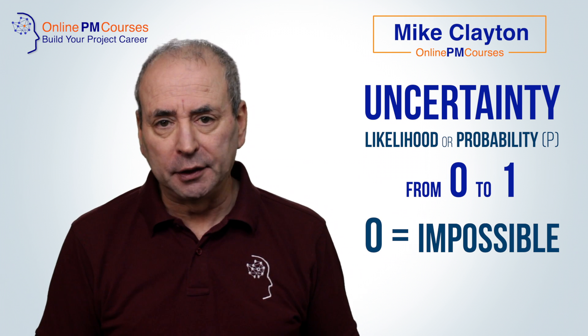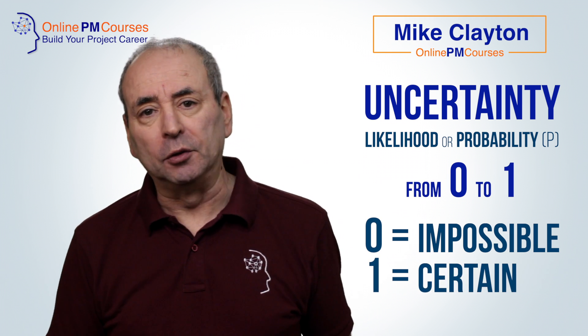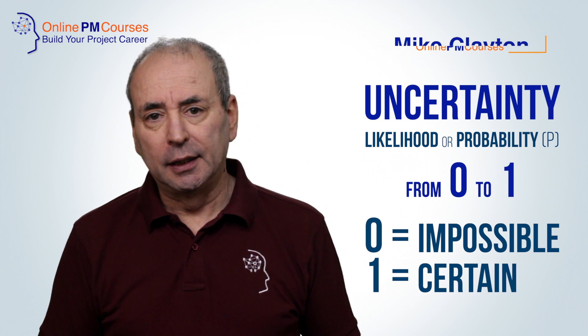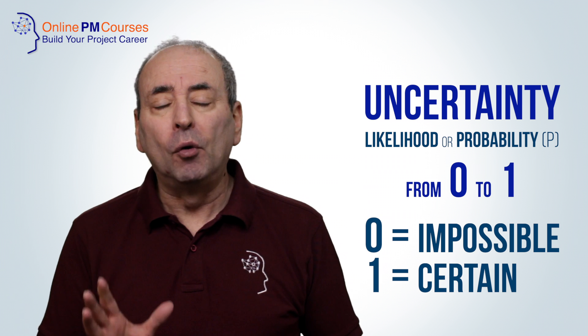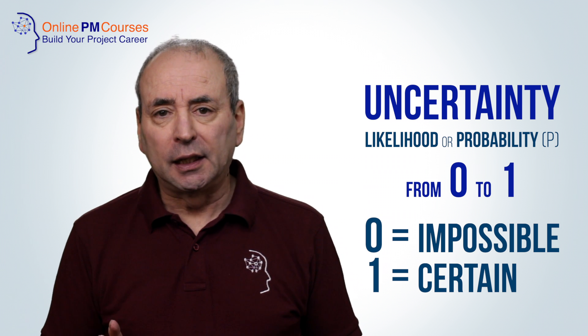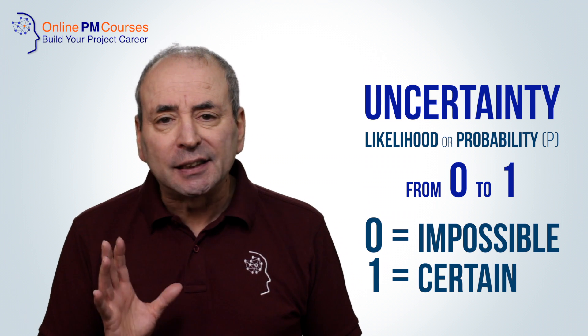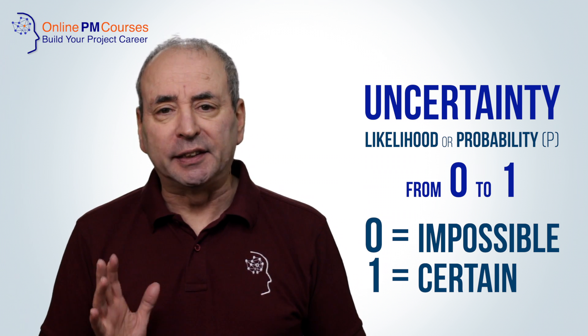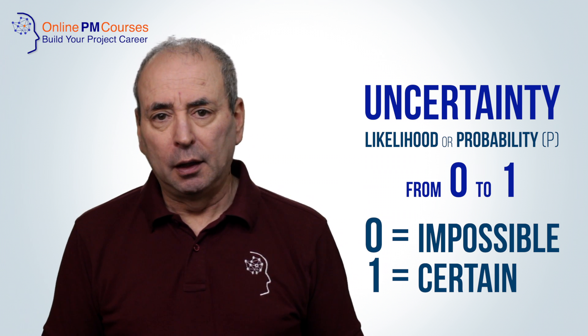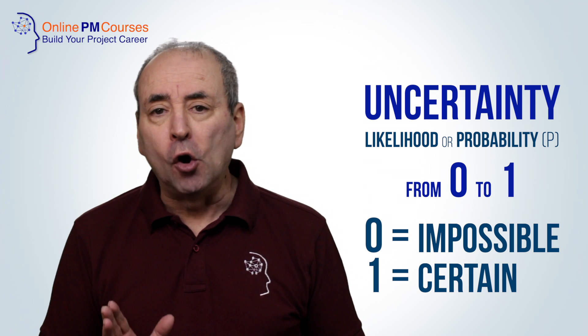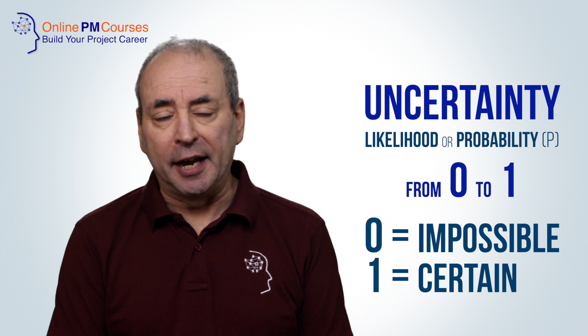With 0 being no probability or no likelihood and 1 being an absolute certainty. Therefore all risks lie somewhere between 0 and 1, but not at either end point.